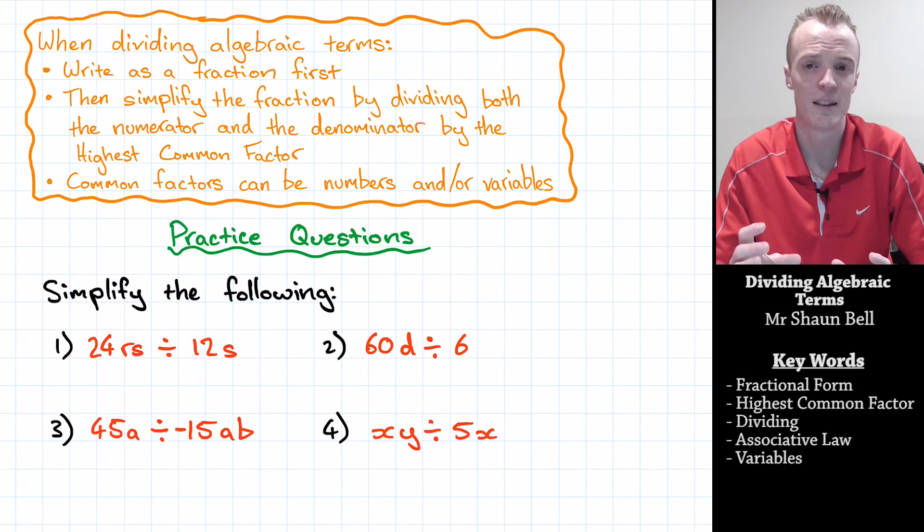From there we simplify each fraction individually by dividing both the numerator and the denominator by the highest common factor, and it's important to understand at this point that common factors can be numbers and they can be variables. And then we simplify it to our final answer.